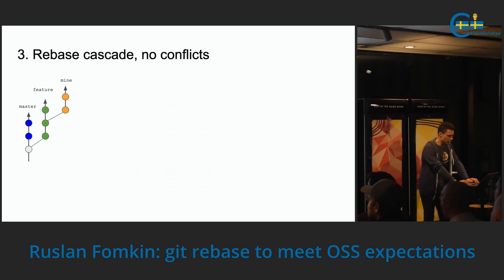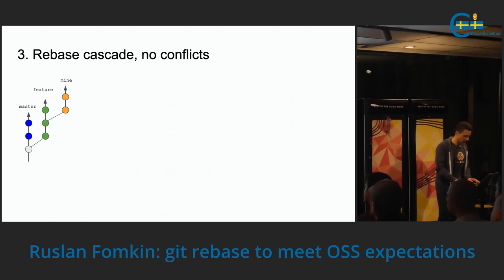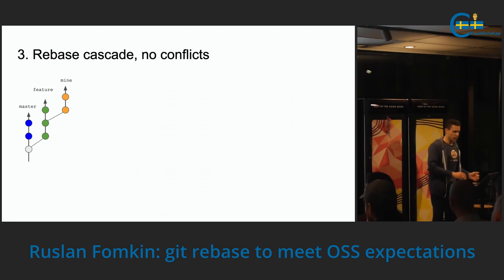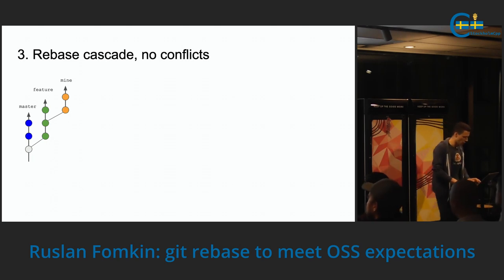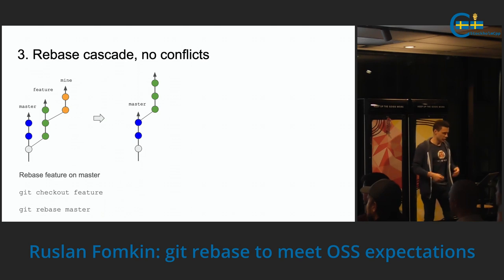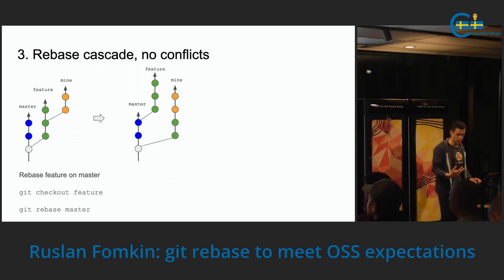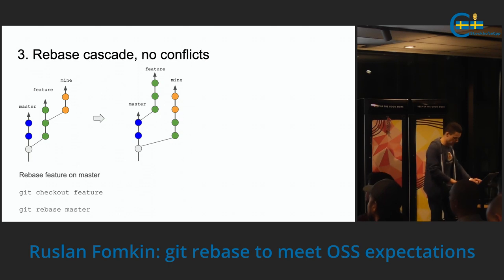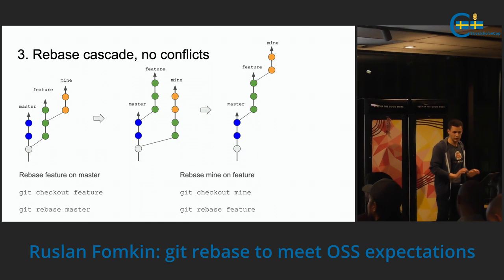Now let's look at a more interesting case where a team is working on a feature. A single developer will have their own branch from the feature branch, and the feature branch was branched from master. What's demonstrated here is that there were two more commits in master. The task is to rebase feature on master and then rebase mine on the feature branch. It's quite straightforward if there are no conflicts: use git checkout feature and do rebase on master. After this, what happens with the developer's mine branch — it's now a separate history. So it needs to be fixed, and doing just rebase will do it fine if there are no conflicts.